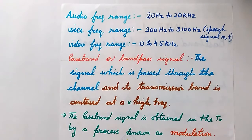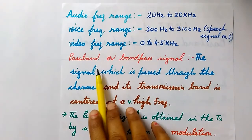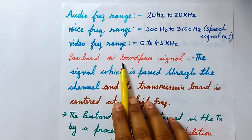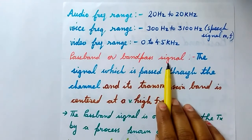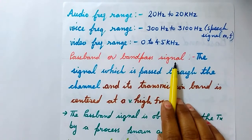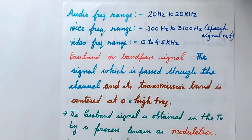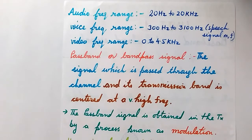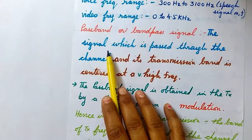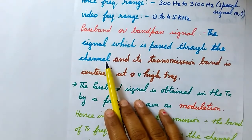Now coming to the another term, which is the passband signal — it can also be known as the band pass signal. A passband or band pass signal is one which is obtained after the baseband signal is modified by some modulation process. What the modulation process is, we will discuss in another video. The signal which is passed through the channel — the transmitted signal — has its transmission band centered at a very high frequency.